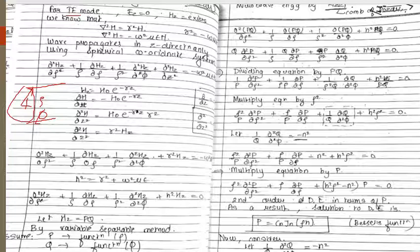We are assuming no attenuation, so alpha equals 0, and gamma becomes j-beta. Squaring both sides gives gamma-squared equals minus beta-squared, where beta equals omega times the square root of mu-epsilon. Using the cylindrical coordinate system, the wave equation for Hz expands as: d²Hz/drho² + (1/rho)(dHz/drho) + (1/rho²)(d²Hz/dphi²) + d²Hz/dz² = minus omega-squared mu-epsilon Hz.